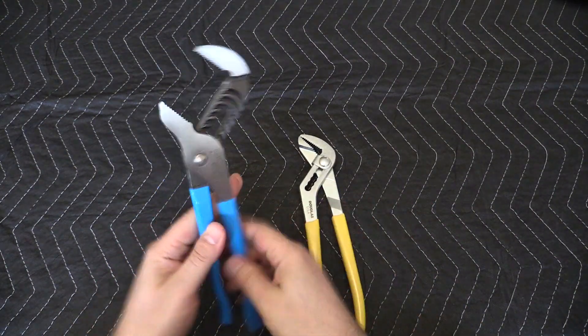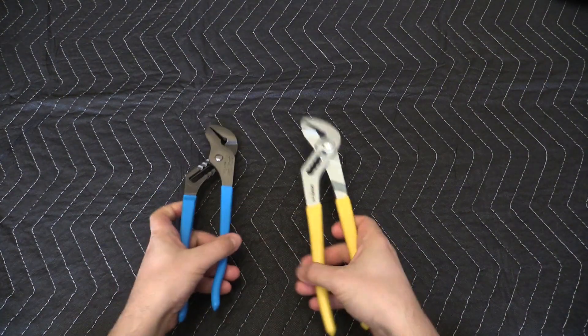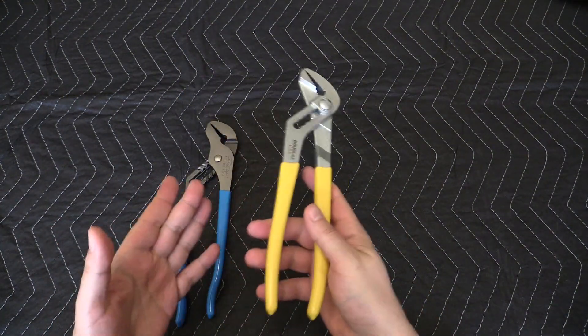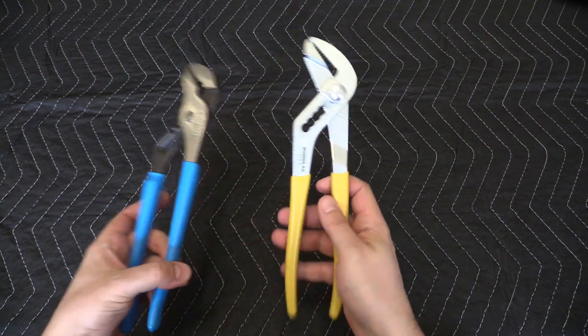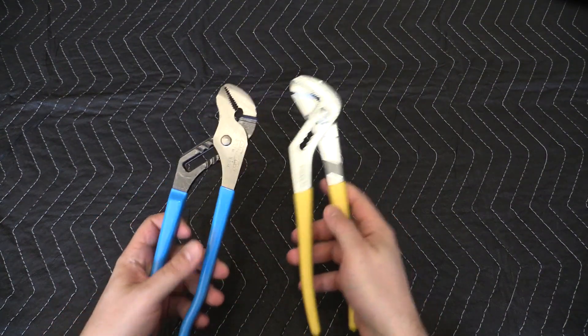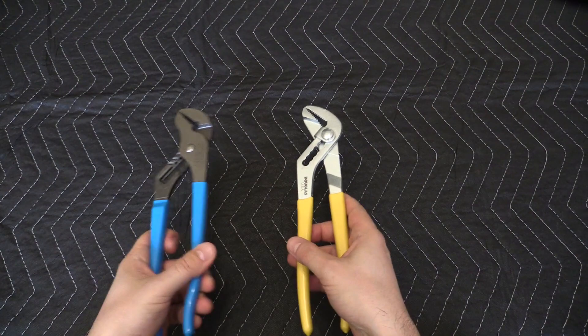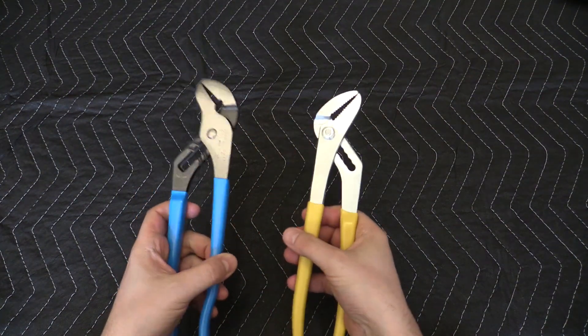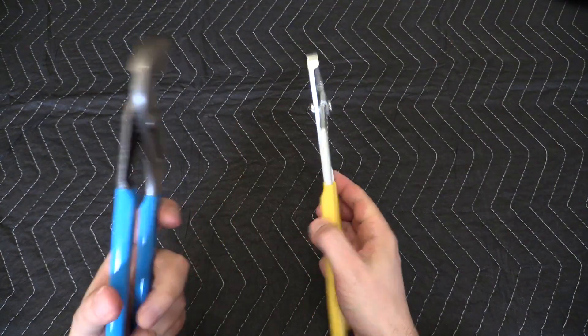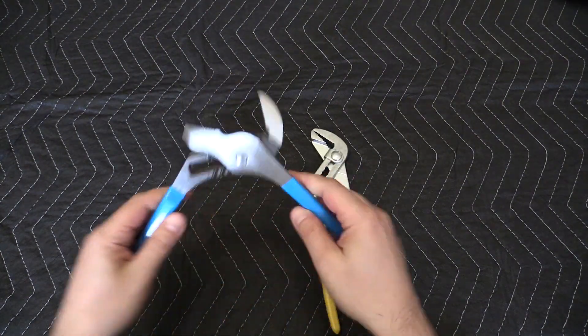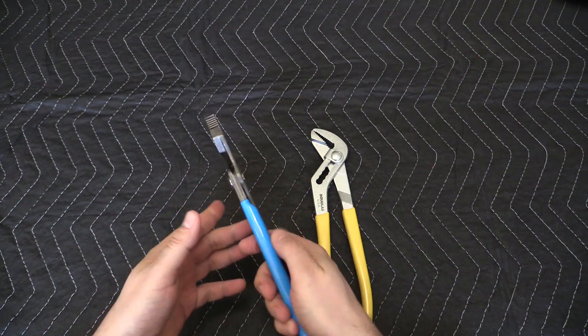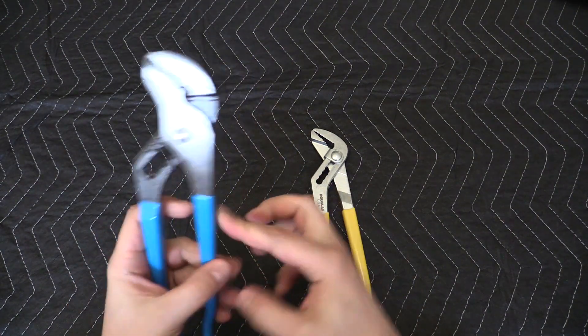So in terms of my opinion on these Douglas pliers, I heard a lot of good things about these and I got these expecting them to replace my channel locks, but I gotta say honestly I like the channel locks better. Even if they were the same price, I'll still take the channel locks simply because it's more straightforward to use, there's nothing finicky about it, it just grabs.